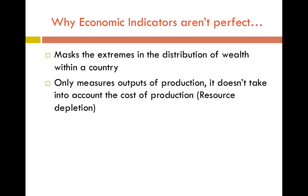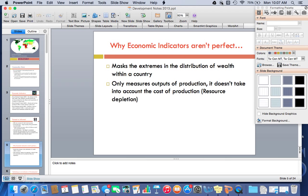GNI also only measures outputs of production. It doesn't take into account the cost of production, such as resource depletion. For example, a country may be a large lumber producer, but they're cutting down their natural resources — their forests and trees. Similarly, the depletion of oil reserves or natural gas reserves is not captured. It only measures the outputs; it doesn't take into effect the environmental degradation that's potentially happening. And that is where we're going to end this flipped classroom.